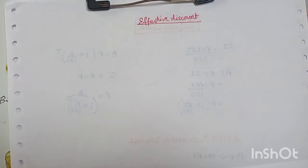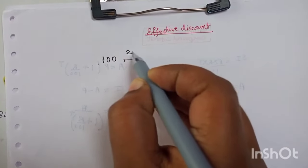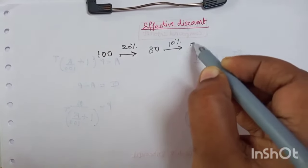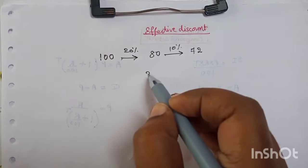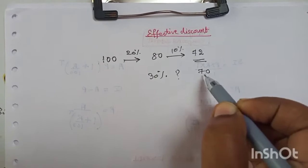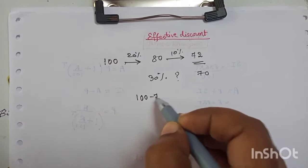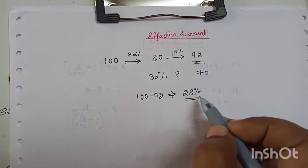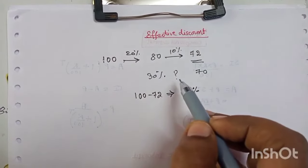Now let us see what effective discount is. In the previous example a product of 100 rupees was given a 20% discount and sold for 80 rupees, then a 10% discount and sold for 72 rupees. So is the effective discount 20 + 10 = 30%? No — because if it were 30%, the selling price would be 70 rupees. The effective discount is 100 − 72 = 28%.